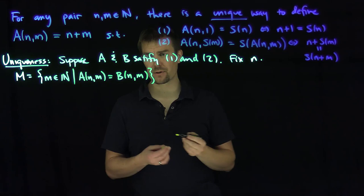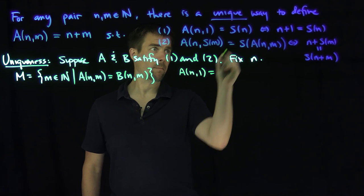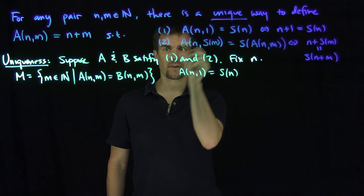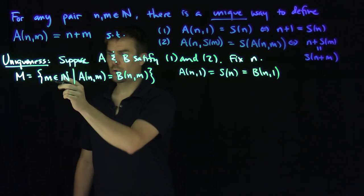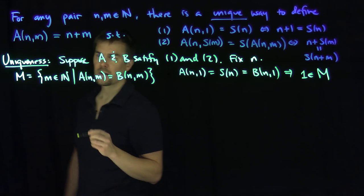First note that A(n,1), by property one, is the successor of n. But B(n,1), since it also satisfies property one, is also the successor of n. So this statement is equivalent to saying that 1 is in M. So 1 is in the set M.